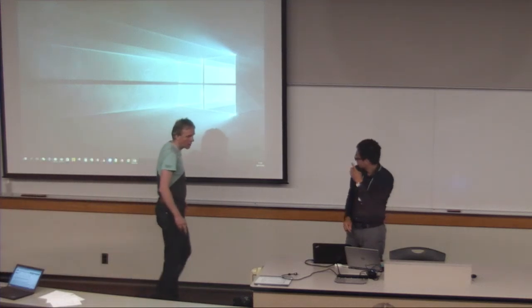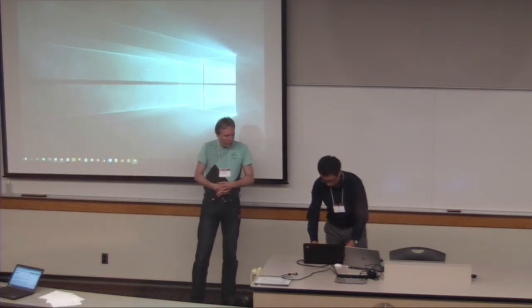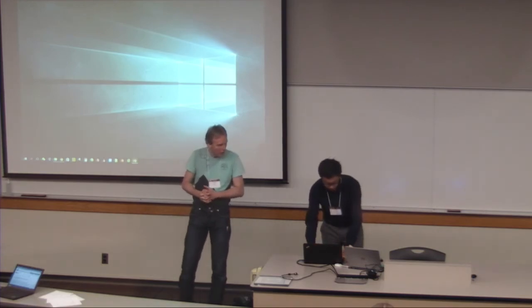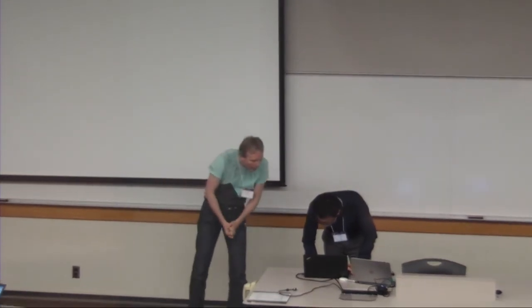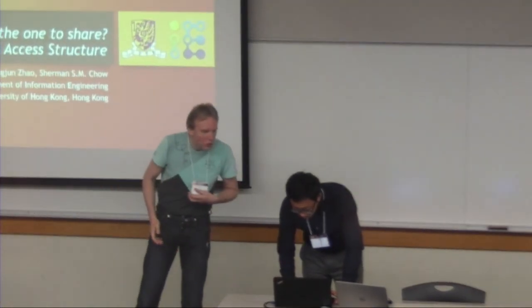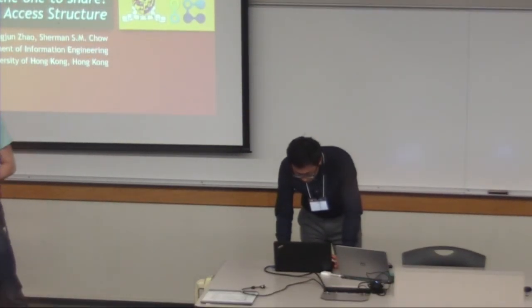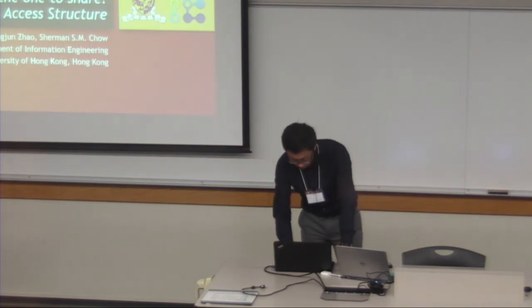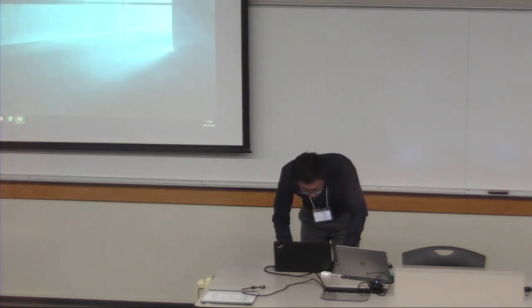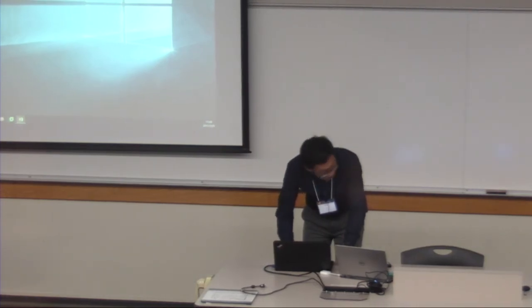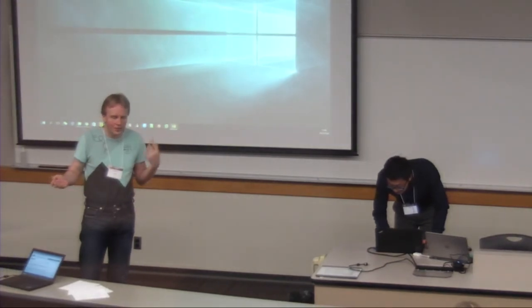The next paper is about oblivious transfer and secret sharing, authored by Yongchun Zhao and Sherman Zhao. Sherman intended to give the talk but could not get into the United States, so the talk is given by Jiang Liu, who was the author of one of the papers in one of the earlier sessions.